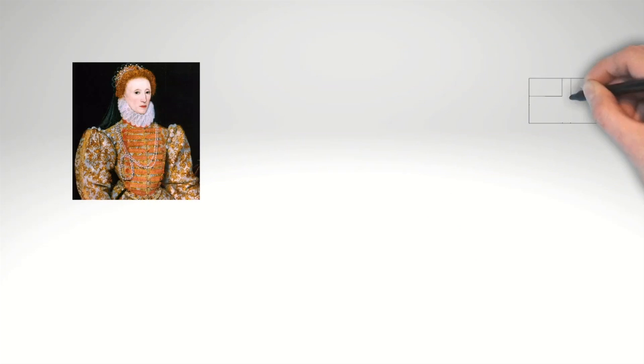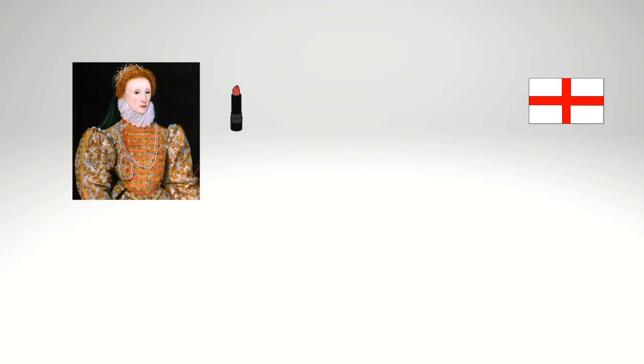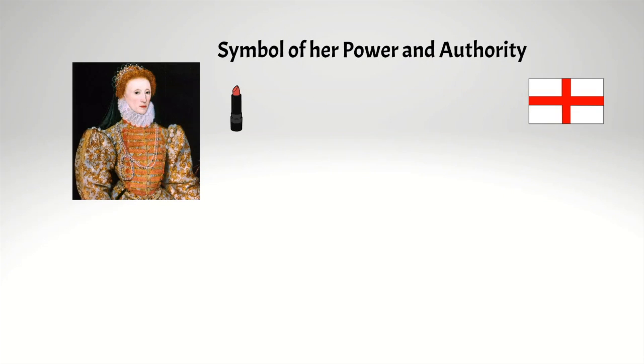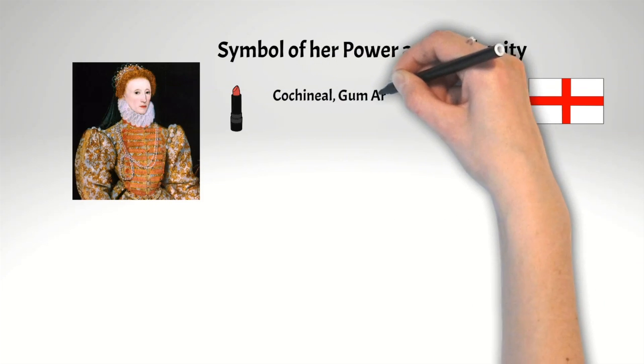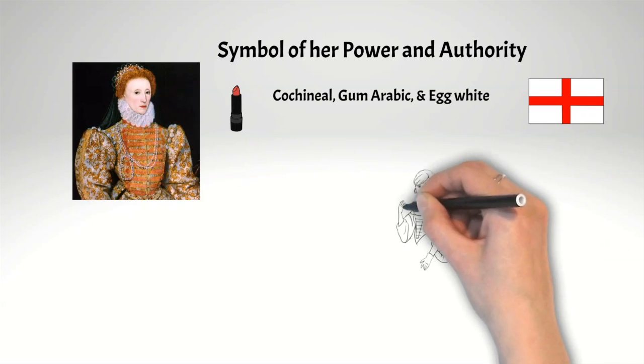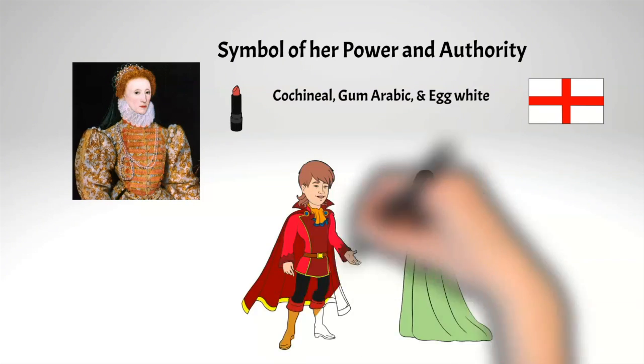During this time, Queen Elizabeth I of England was known for her love of makeup, particularly her use of red lipstick. She wore it herself as a symbol of her power and authority, and is said to have had a favorite shade of red, which was made from a mixture of cochineal, gum arabic, and egg white. As a result of her influence, red lipstick became fashionable among the aristocracy and upper classes in England.